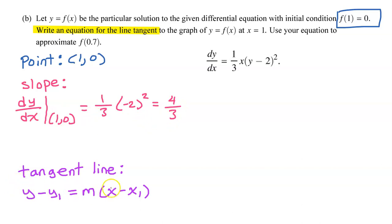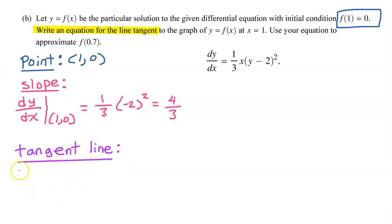Now I can write the equation. The equation of the tangent line will be y minus y1, which is 0, so I write nothing, is equal to the slope, which is 4 over 3, times x minus x1, so x minus 1. So there's my equation.